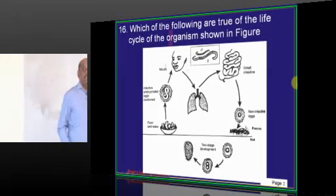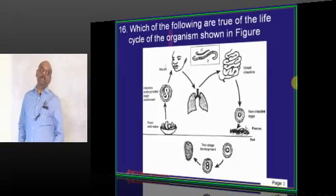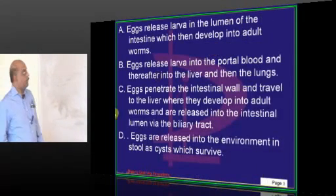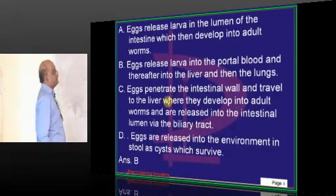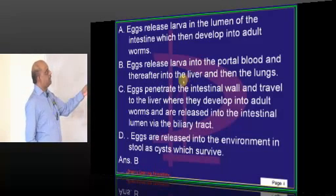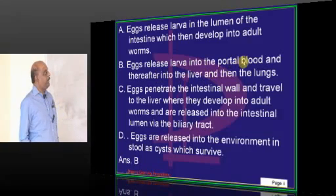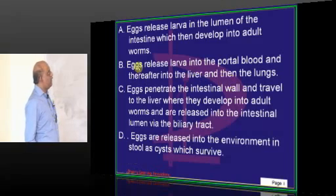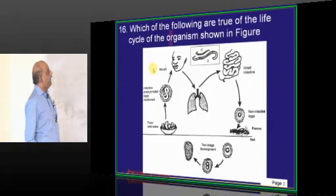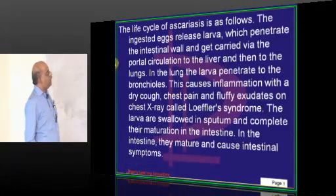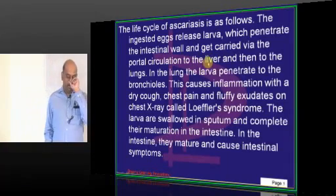What is this organism whose life cycle is being given to you? Ascaris lumbricoides. So what is the true statement about Ascaris lumbricoides? It releases the larva into portal blood and thereafter into the liver and the lungs — this is a true statement about its life cycle as shown in the flowchart.